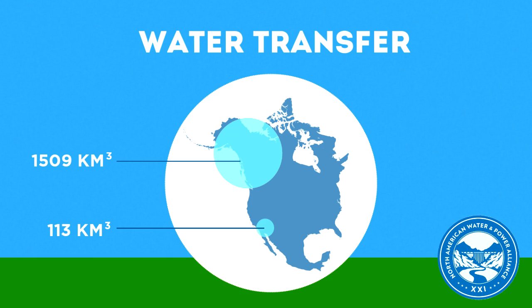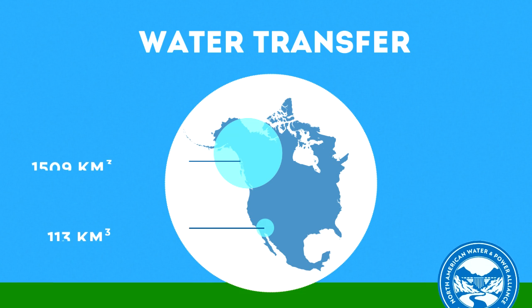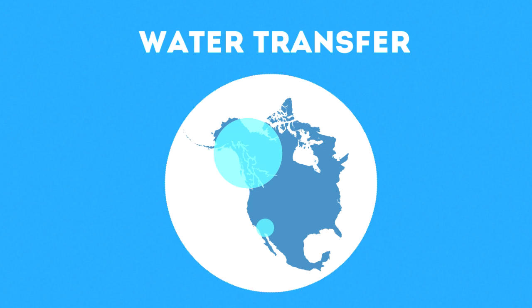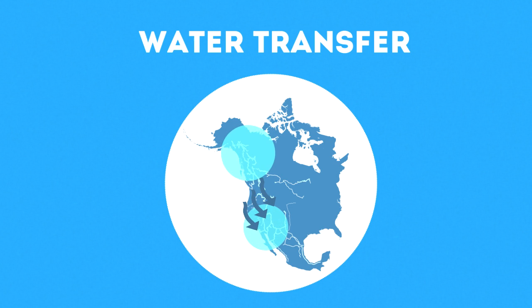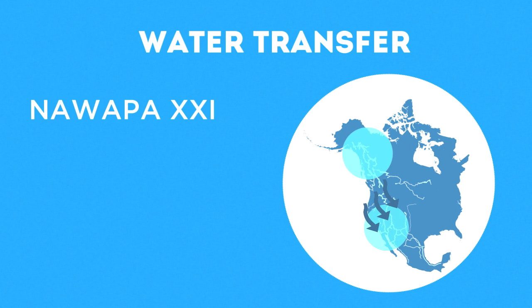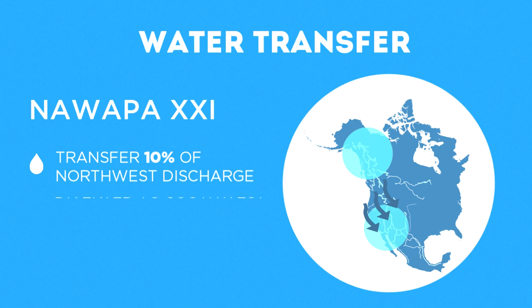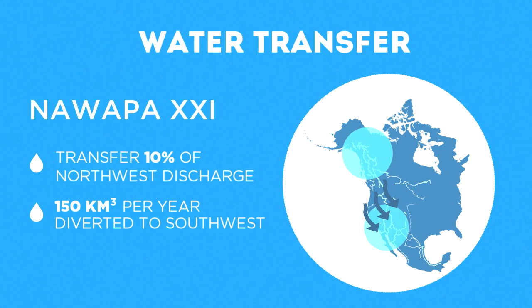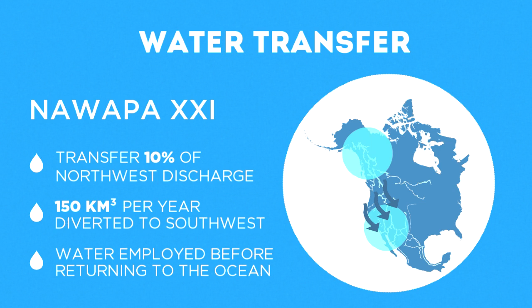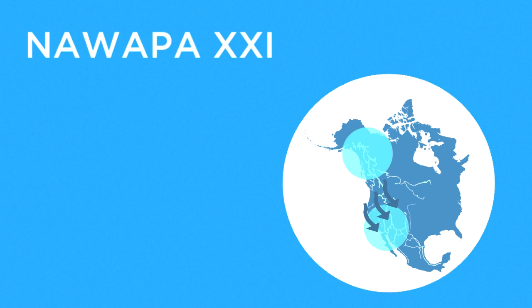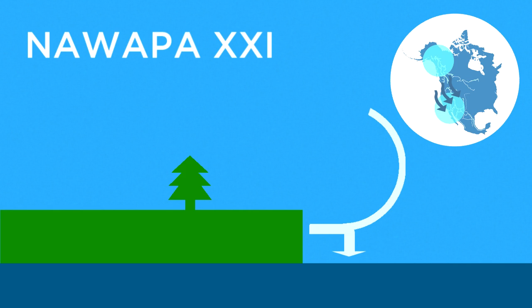How can we address this great western discrepancy? The NAWAPA 21 project would be the largest water project in world history, diverting water from the Northwest, where it exists in abundance, into the Southwest, where it is desperately needed. An updated version of the program could transfer roughly 10 percent of the Northwestern discharge — 150 cubic kilometers per year — down throughout the Southwest before that water returned to the ocean. The addition of this amount of water could double the photosynthetic productivity of the Southwest, increasing the productivity of the entire cycle without changing the net volume of its flow.